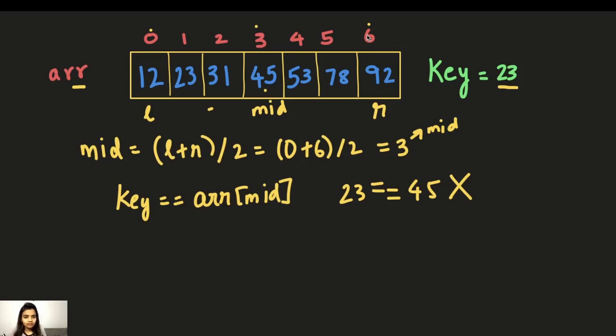Now why we're doing this is since the elements of the array are sorted, we can safely assume that if the key is lesser than the middle element, then this part of the array will have the key because all these elements are smaller than the middle element. But if the key is greater than the middle element, then we check whether it is there in this part of the array because all these elements are bigger than the middle element.